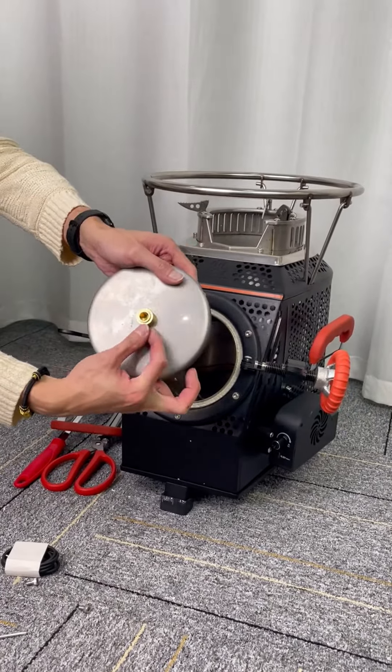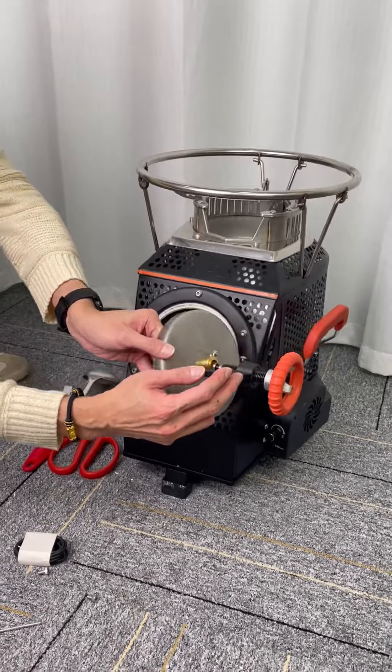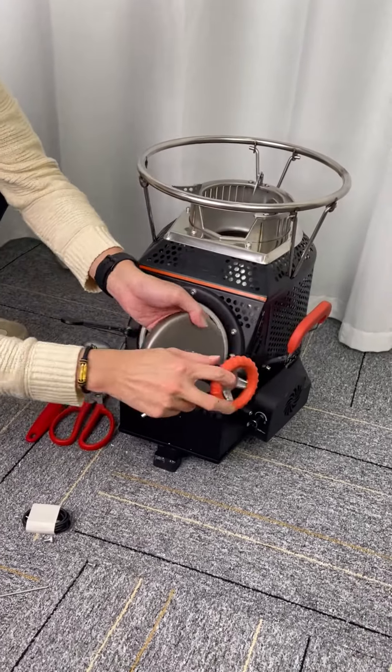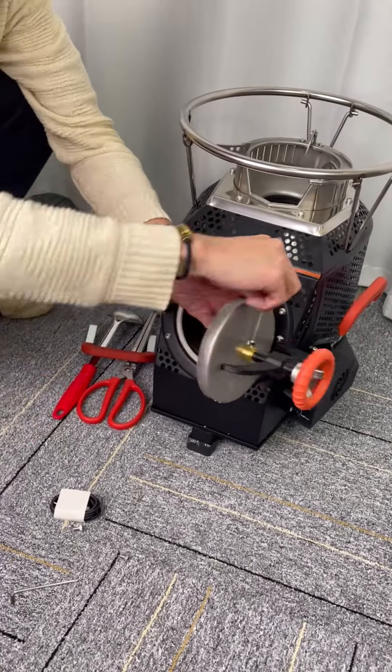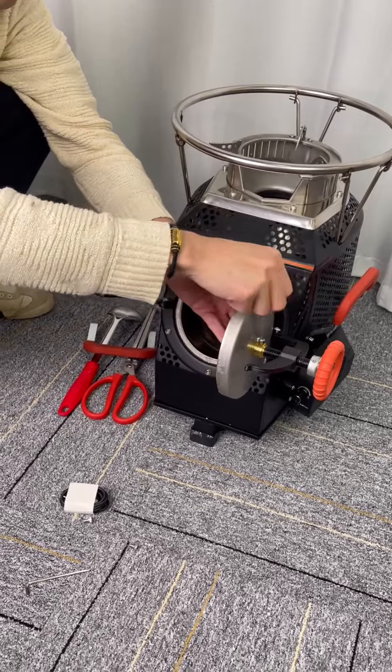Install stove door. Unscrew first. Put the stove door in its rack and tighten the screws. Rotate it. Okay, stove door is installed good.